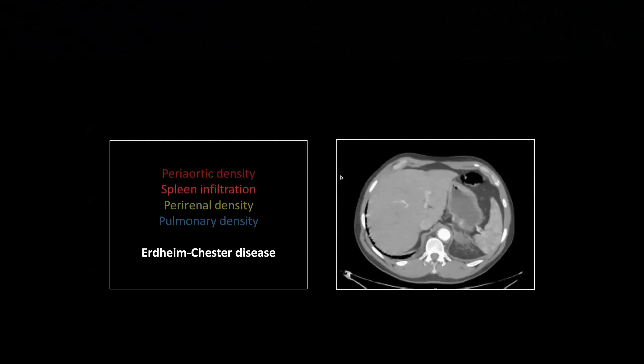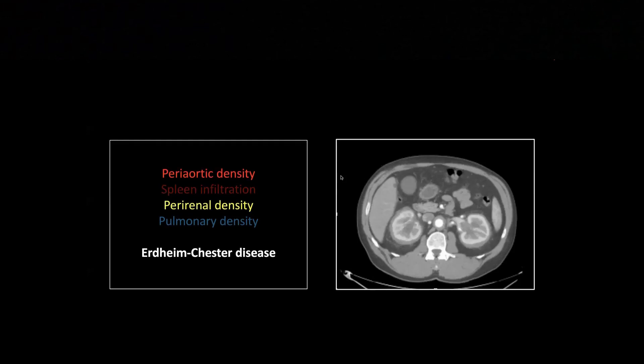You can see the spleen is infiltrated. It's very heterogeneous in appearance, pretty nonspecific, but certainly not a normal spleen. We're late enough in the contrast phase to say there's something going on in that splenic parenchyma. And then lastly, perirenal density. So there's that coated aorta, and then these are referred to as hairy kidneys.